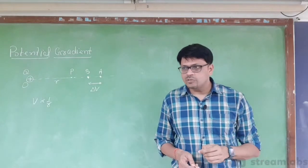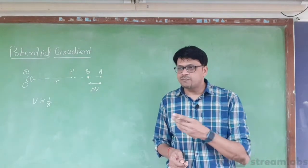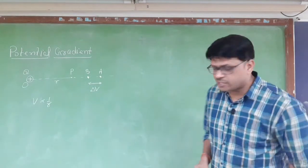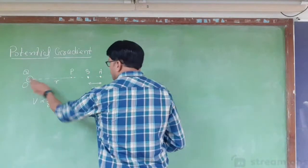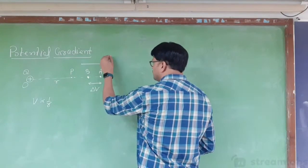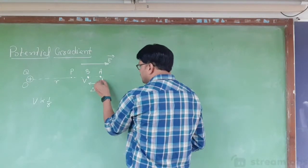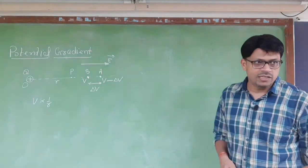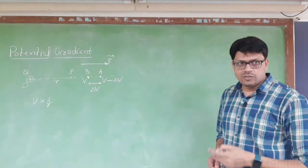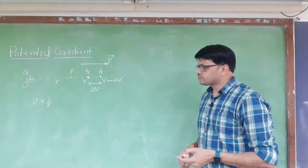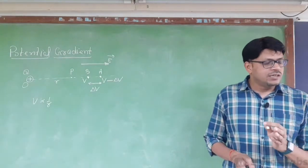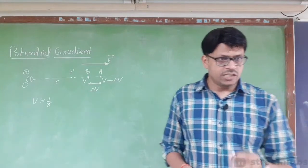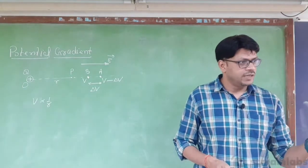The direction of electric field and the increase or decrease of potential are also related. For a positive source charge, potential at B is higher and potential at A is V minus delta V. What you need to remember: in the direction of the electric field, potential decreases. Potential decreases in the direction of the electric field.